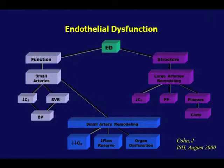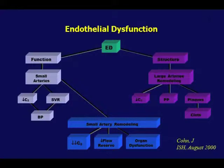Later it progresses into a structural problem, leading to an increase in large arterial stiffness, which increases your pulse pressure and results in atherosclerosis. Eventually the artery tries to defend itself by remodeling — it becomes very thick, the lumen becomes very small, and the muscle very thick, which then creates more problems.